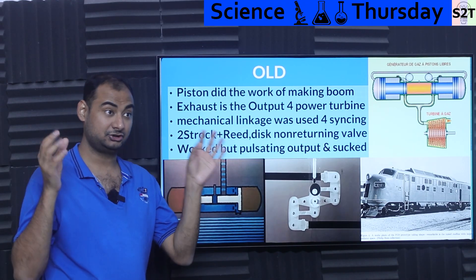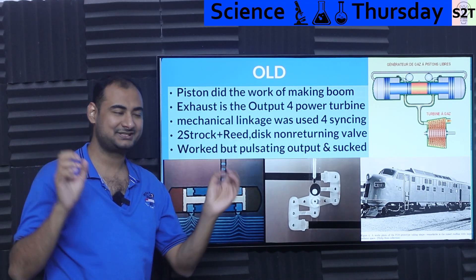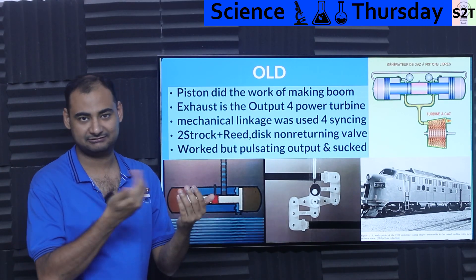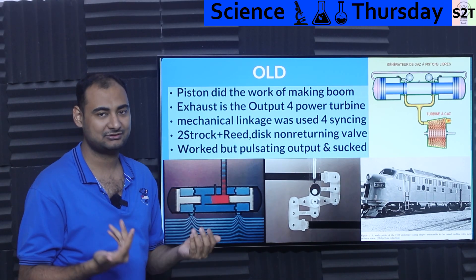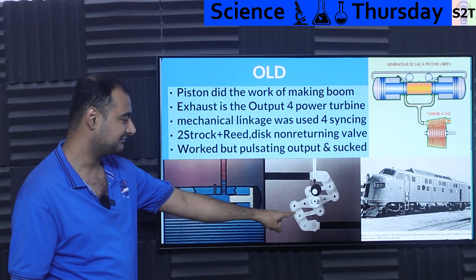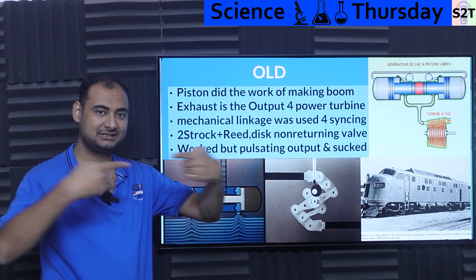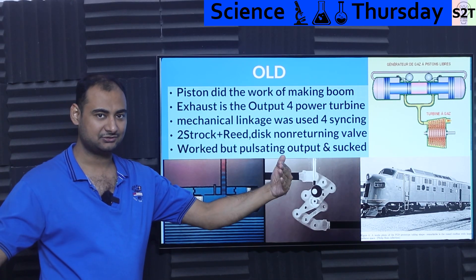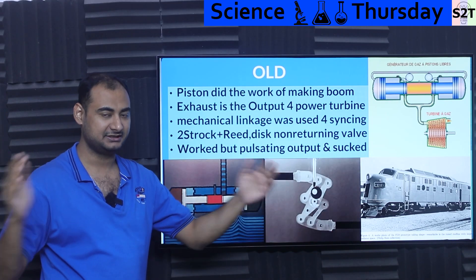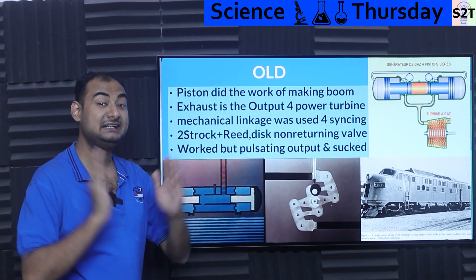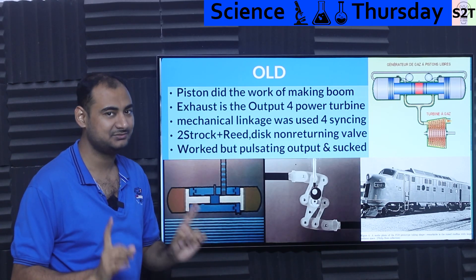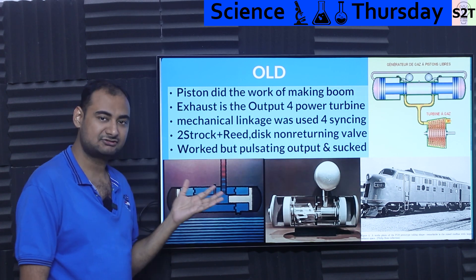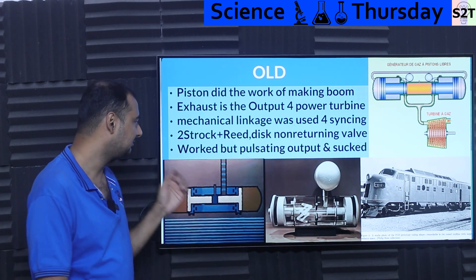To make sure two free pistons are working as intended — because they're free and could fall out of sync — you use linkages that ensure they arrive at the same point simultaneously: top dead center and bottom dead center in sync. That solves the syncing problem.